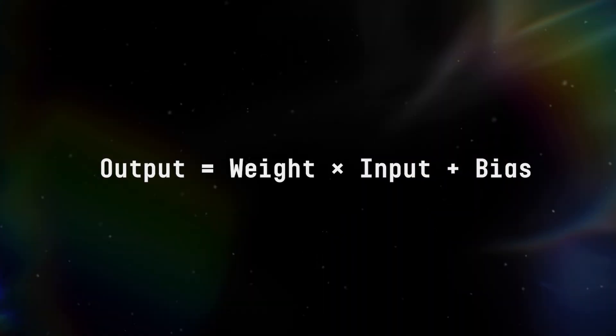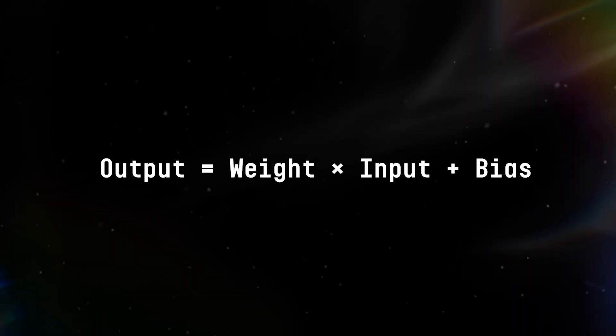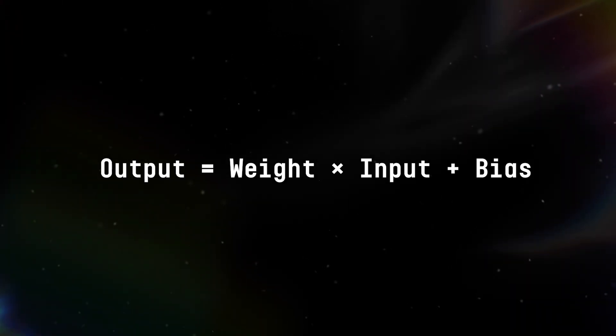At its heart, a neural network uses a simple equation: output equals weight times input plus bias. Think of it as a balanced scale, adjusting weights to find the right balance. These weights and biases are tweaked over time, allowing the network to learn and to make better decisions.